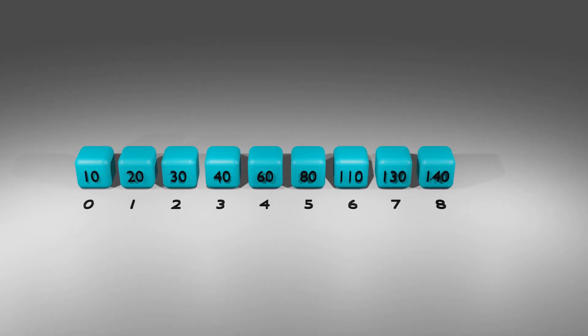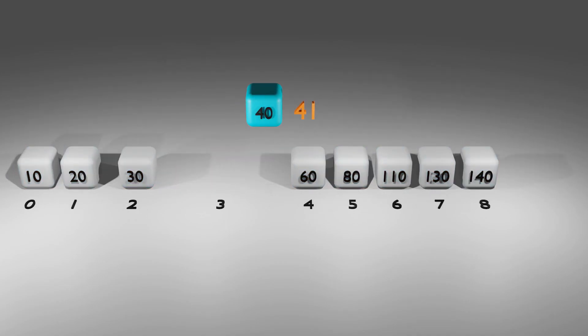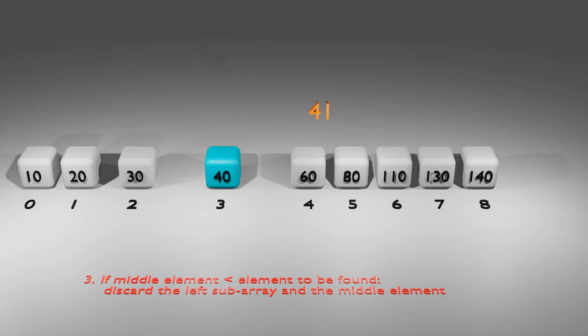Okay, let's explore a scenario where the element we're searching for is not present in the given array sorted in ascending order. To illustrate, let's imagine that we were searching for 41 instead of 40, which was the middle number we were comparing in the previous example. In this case, the two elements don't match and rule number three comes into play requiring us to solve the right sub array excluding the middle element. However, this approach leaves us with no elements or sub arrays to search. So we return minus one.